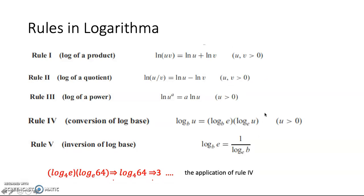Here are other rules of logarithm which can also help you in solving problems. There are five rules for you to know. Here I have an example: solve 4·log(e) × e·log(64). To solve this equation, we follow rule 4 — this is like a chain rule. We have 4·log(e) × e·log(64), which is just equal to 4·log(64), which equals 3.